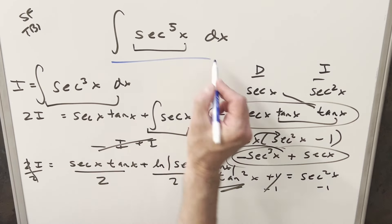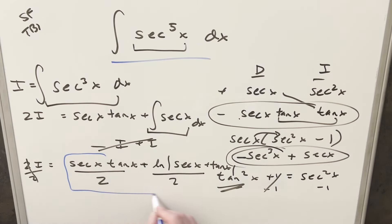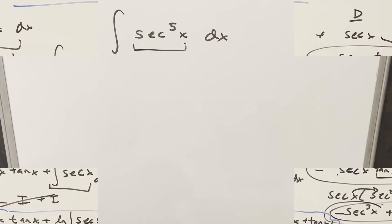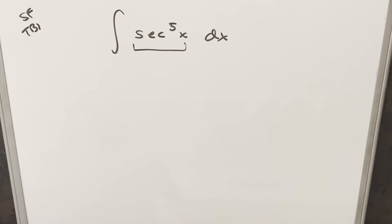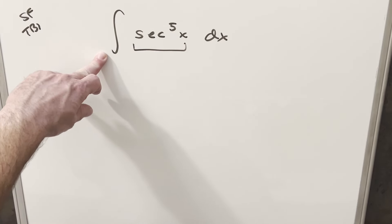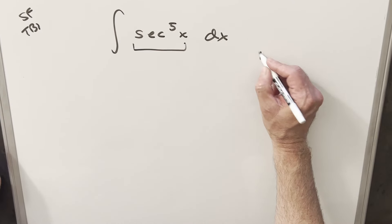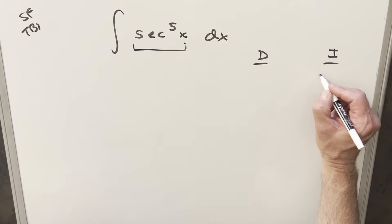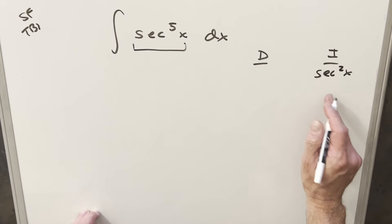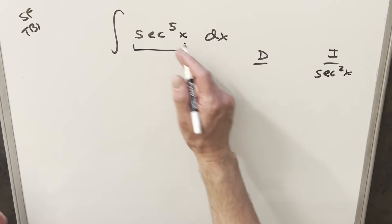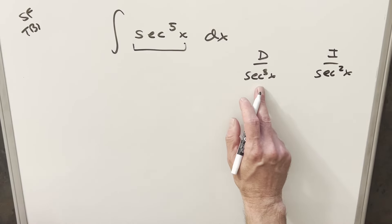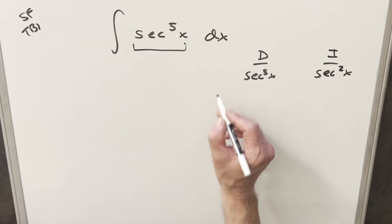Now we can get back to our goal: secant to the fifth x. I'll box the result for sec³x and bring it to the next board. Now that we have the integral of secant cubed x, we'll do the same kind of thing for secant to the fifth x using the DI method — splitting it as secant cubed x times secant squared x, since sec²x · sec³x = sec⁵x.